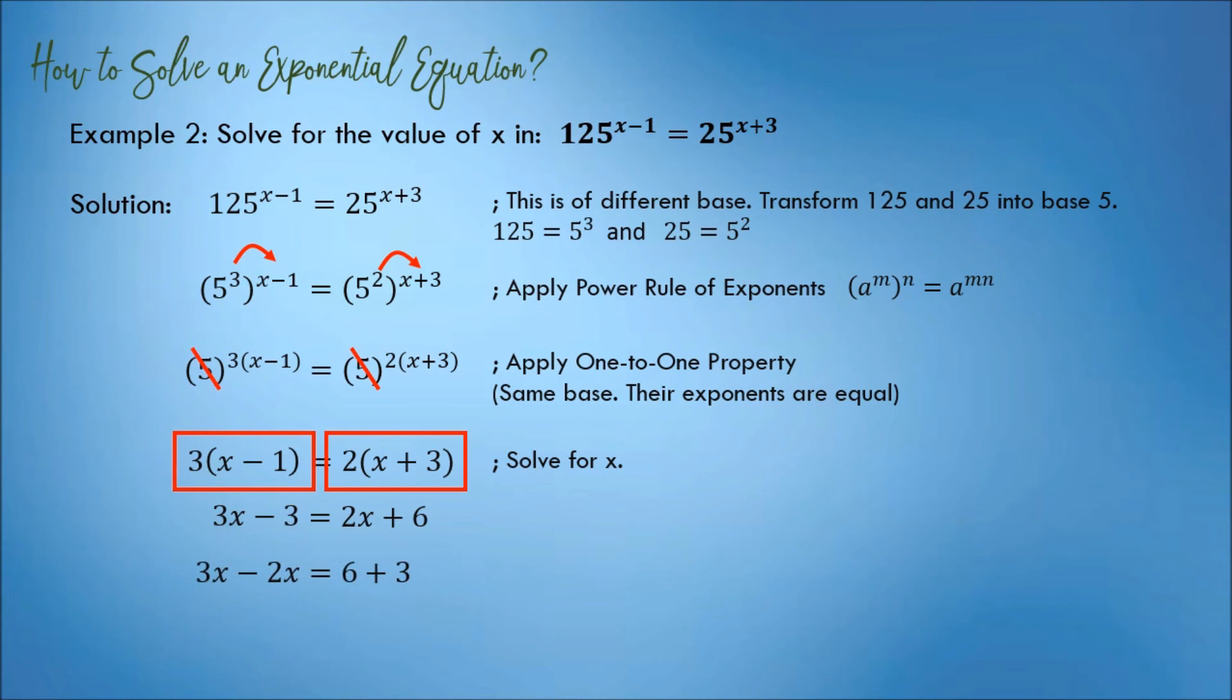Transpose 2x to the left and transpose negative 3 to the right. The result is 3x minus 2x is equal to 6 plus 3. 3x minus 2x is x, 6 plus 3 is 9. Therefore, the value of x is 9.